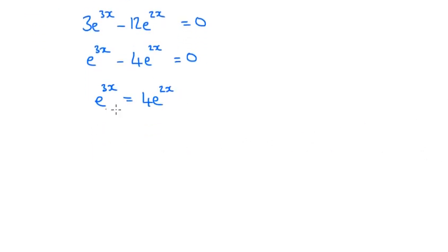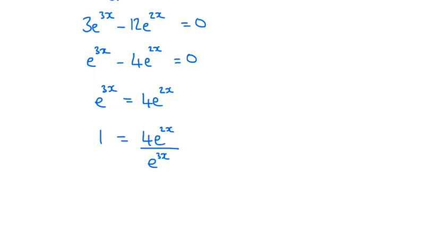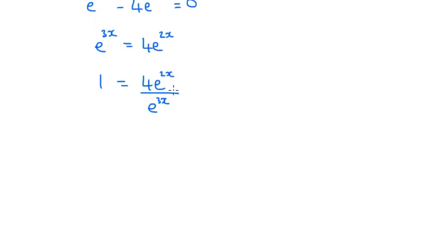So if I now divide by e to the 3x, I'm going to have 1 equals 4 e to the 2x over e to the 3x. And the reason I've done that is because we're now going to be able to simplify the e to the 2x over e to the 3x. They have the same base. So using index laws, we're just going to subtract the powers. So that's going to give me e to the negative x.